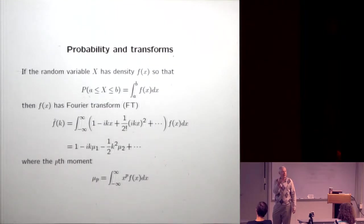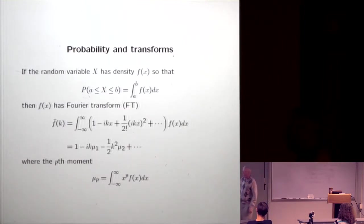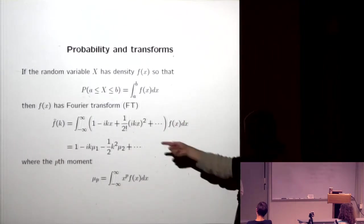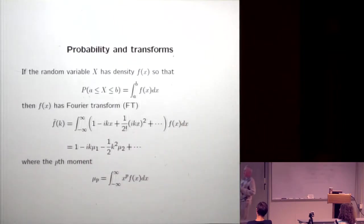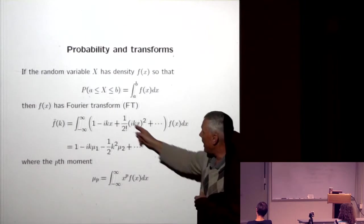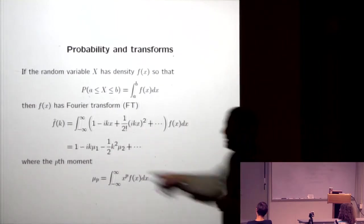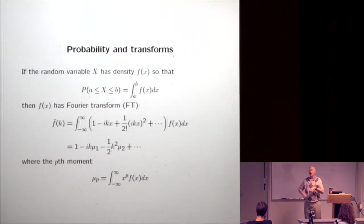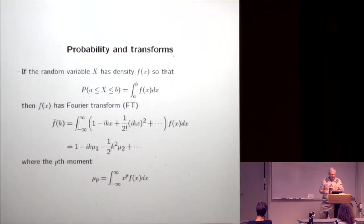The zeroth term gives 1, the first gives the mean (first moment), the second gives minus one-half k² times the second moment. For distributions with moments of all orders, knowing all the moments means knowing the Fourier transform, which means knowing the density. If you know all the moments, you know the probability density.